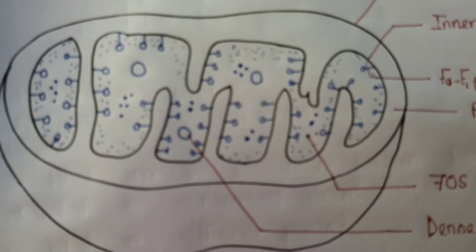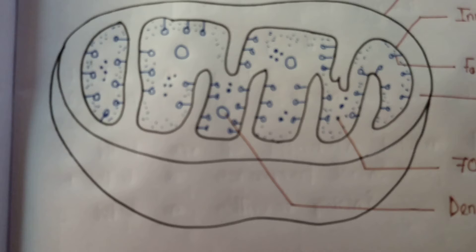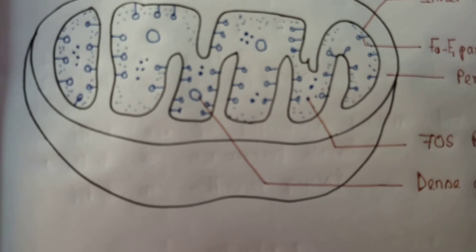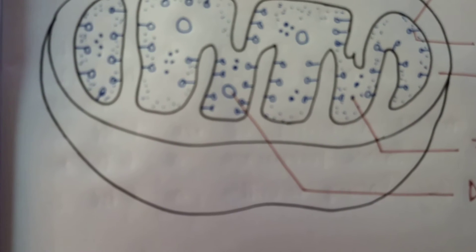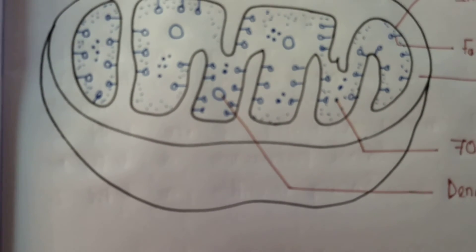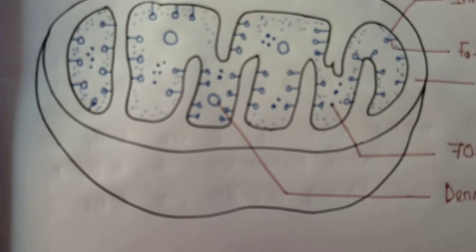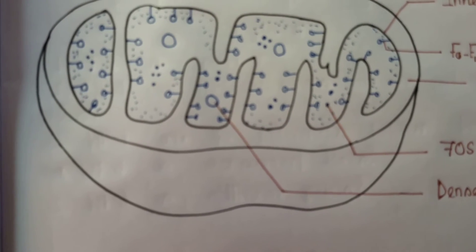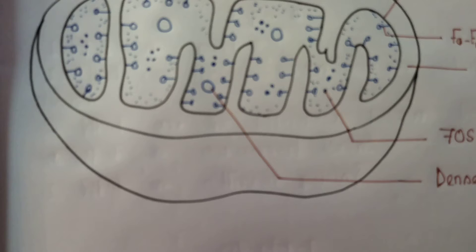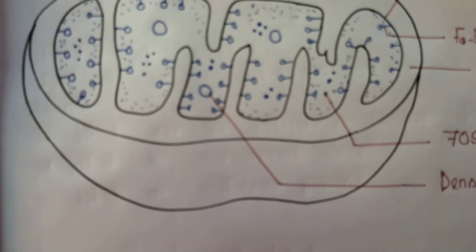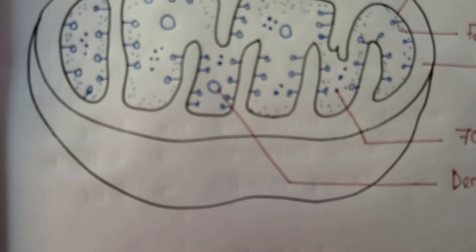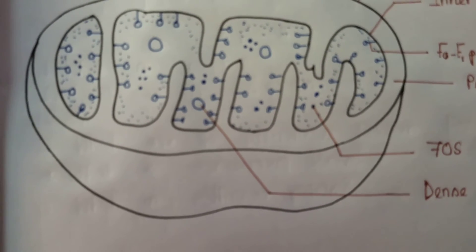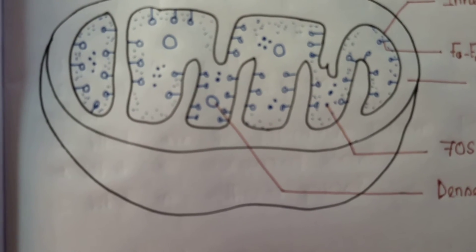Unless you stain this properly, it will not appear clear under microscope. Once properly and specifically stained, it is easily visible. The number of mitochondria is variable depending on the physiological activity of the cell, and shape and size may also vary. This sausage-shaped or cylindrical organelle...